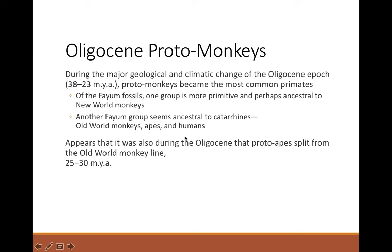The Oligocene involves major geological and climatic changes — this is when the continents really start to shift into their modern-day positions. We've got two proto-groups from a fossil deposit called the Fayoum: the Propliopithecids and the Parapithecids. These are the groups ancestral to what become Old World and New World monkeys. New World monkeys are considered more primitive; Old World monkeys are considered more derived.